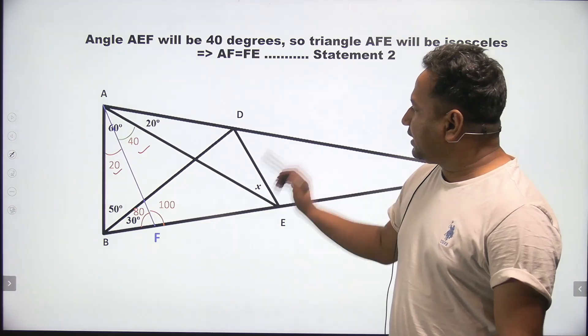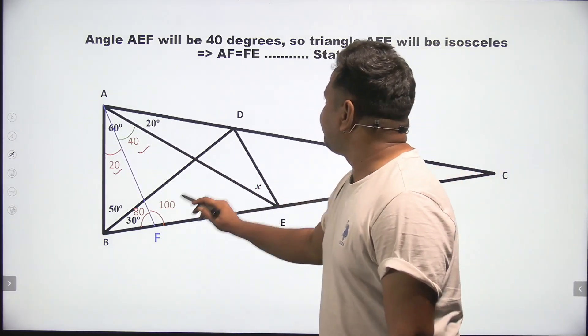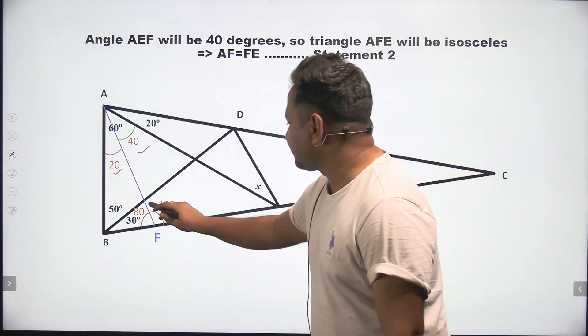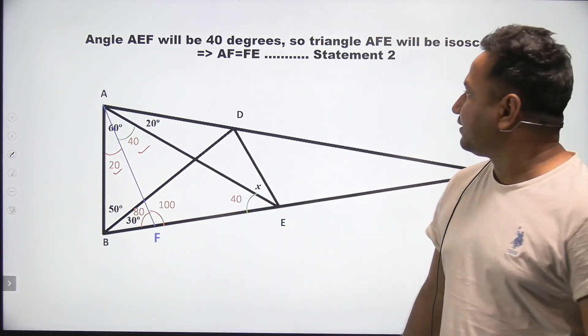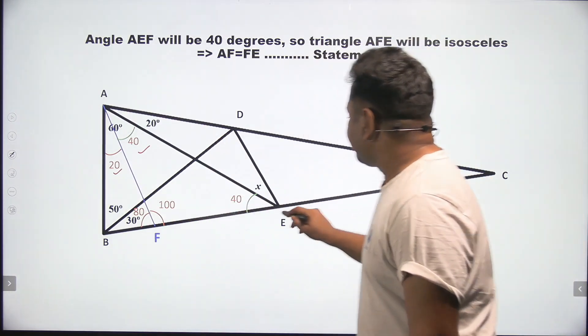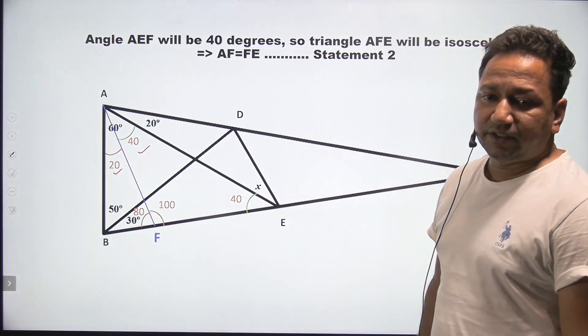Now, angle AEF will be 40 degrees. Of course, because this one is 100, this is 40, so this has to be 40 degrees. Which means the sides AF and FE will be equal. Let this be statement 2.